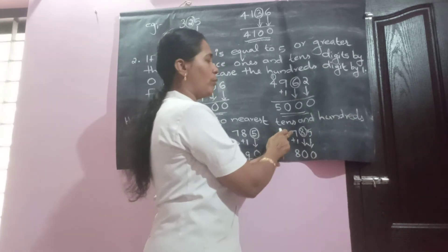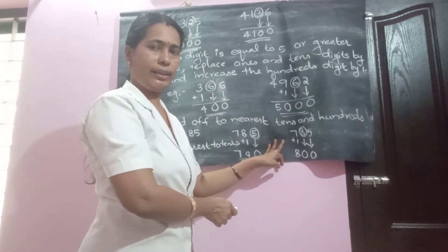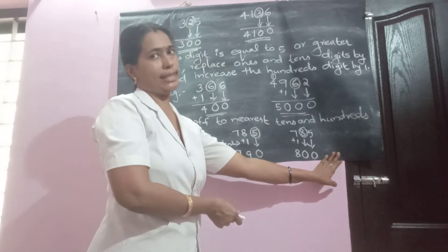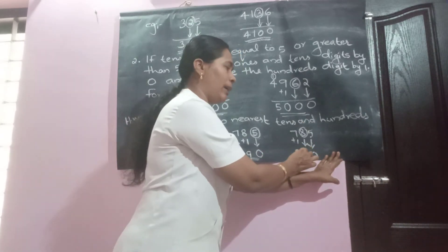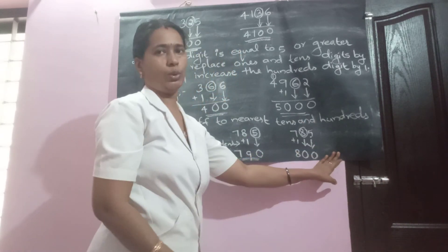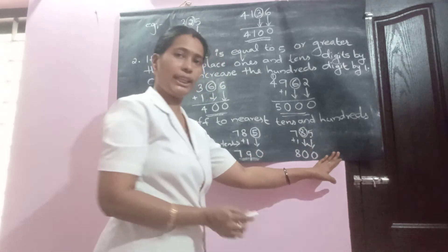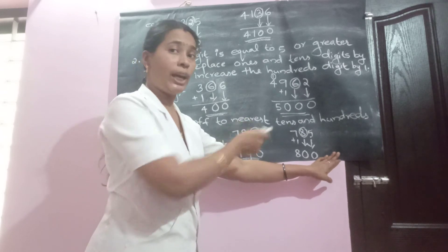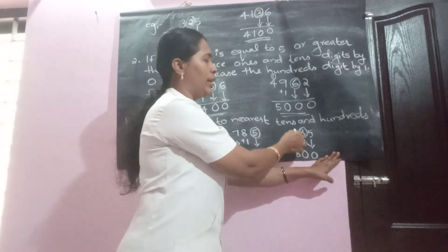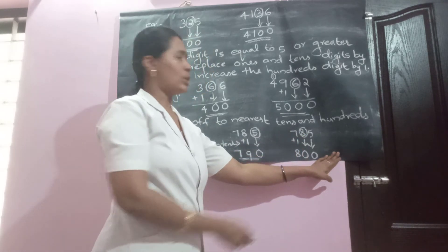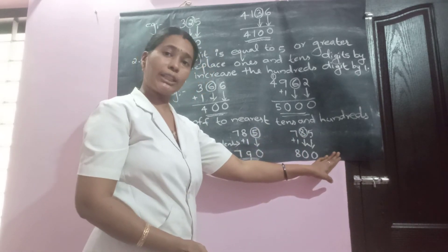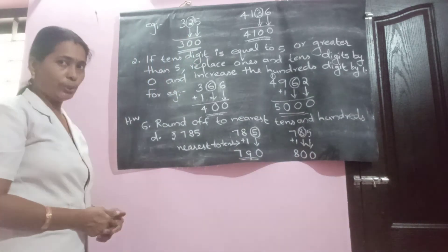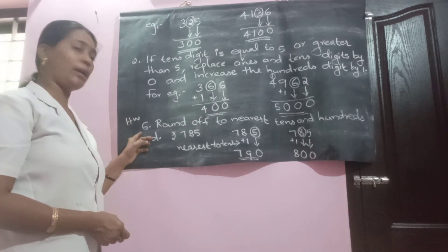Same number 785, but now rounding to nearest hundreds. Circle the ten's digit, replace both by zeros. Think about eight — it is five or more, so add one to seven. Seven plus one gives eight. So 785 rupees has been rounded up to 800. I think it is clear to you. You have to answer the remaining questions from your checkpoint, question number six.